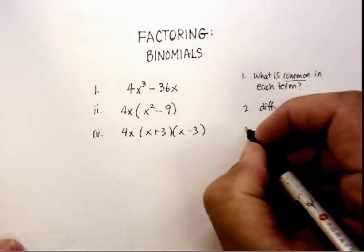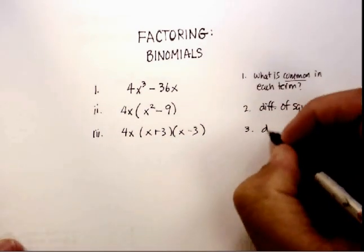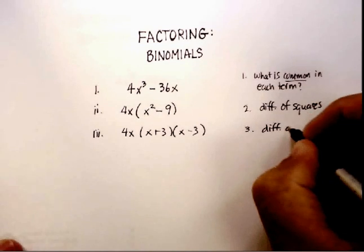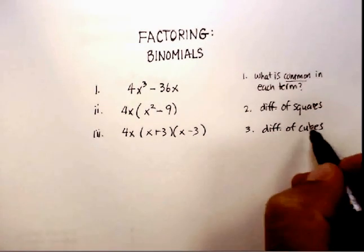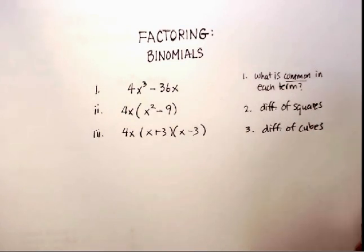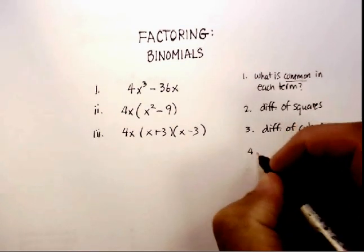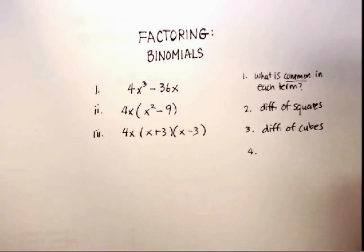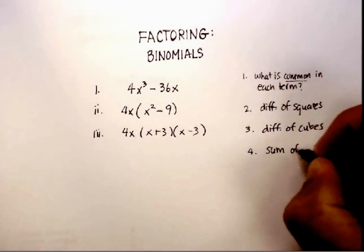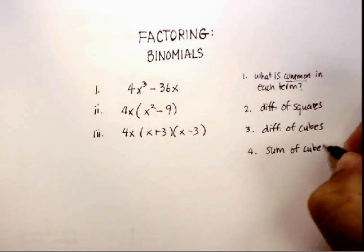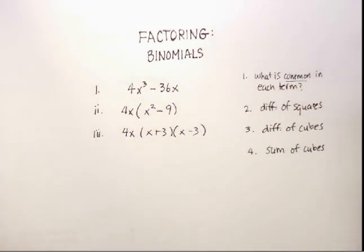The other two ways are one that's called a difference of cubes—and again, it's whatever the name implies, and it implies that you'll have a subtraction of two numbers that have been cubed. And then the fourth type of way to factor binomials is what they call a sum of cubes, and I have two videos for you on those that you can actually check out.